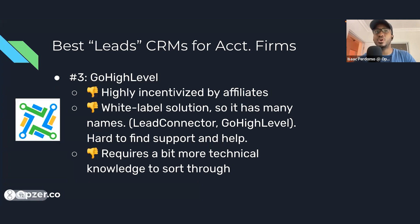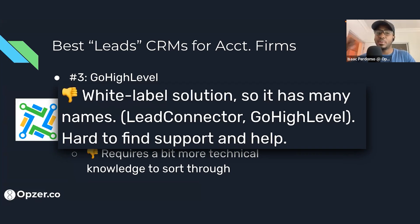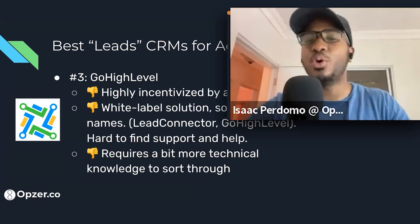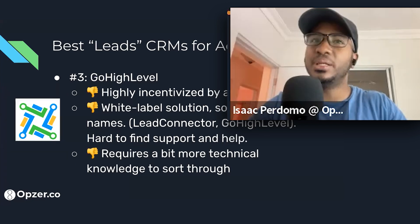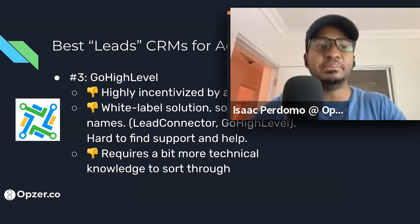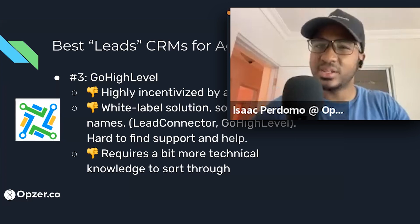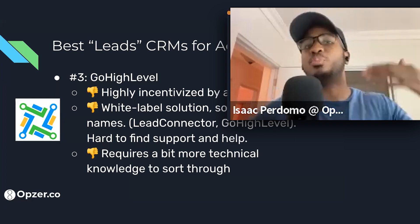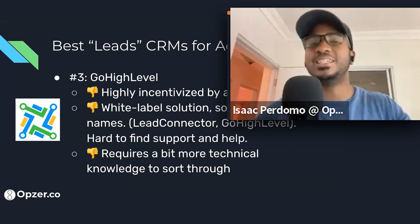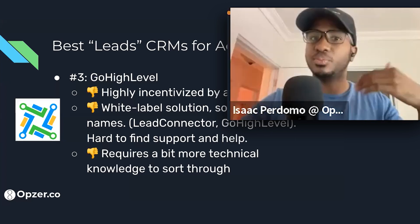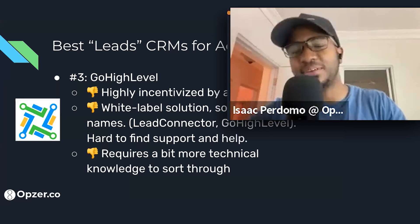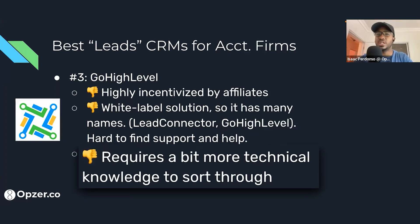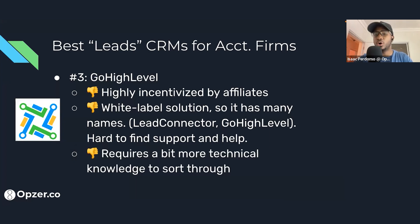One thing I don't like is that Go High Level is a white label solution primarily marketed through affiliates, meaning people get a very hefty commission for recommending this tool. That's arguably the main reason it has grown in popularity recently, so I'm sometimes skeptical of recommendations for it. Because it's a white label solution, it has many different names, which makes it hard to find support and help online — you don't always know what name to search. It's also not as intuitive as HubSpot or ActiveCampaign, and requires a bit of technical know-how, making it challenging for users who aren't tech savvy.